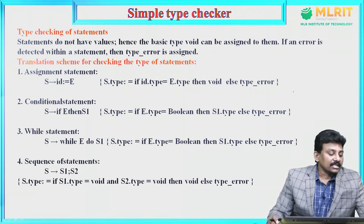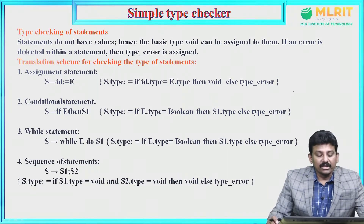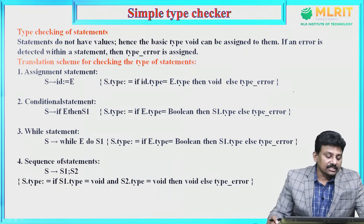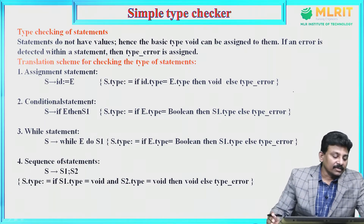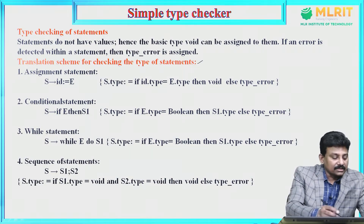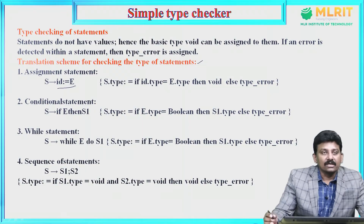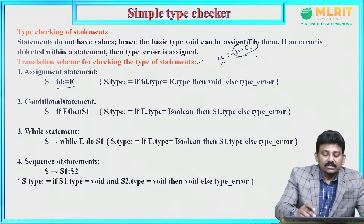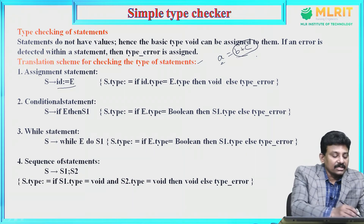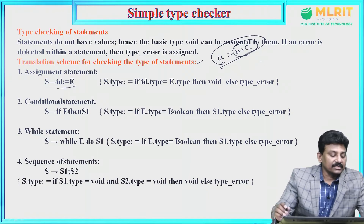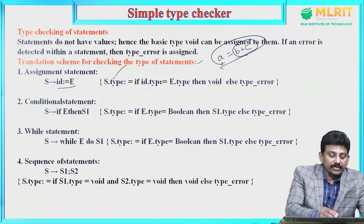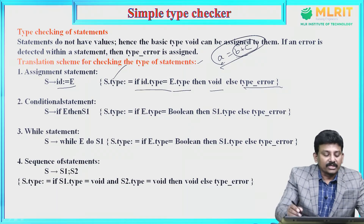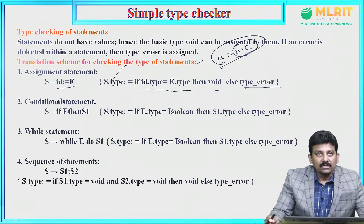Then, type checking of statements. Statements do not have values; hence the basic type void can be assigned to them. If an error is detected within a statement, then type_error is assigned. For an assignment statement S derives id = e, S.type = if id.type equals e.type, then void, else type_error. Because a statement does not contain a value, its type is void.